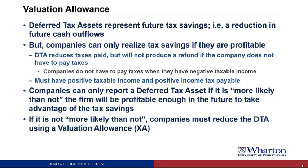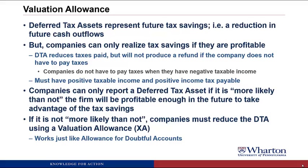If it is not more likely than not that a company will get to use these tax savings, they have to reduce the deferred tax asset using something called the valuation allowance. It's a contra asset and works just like allowance for doubtful accounts. A deferred tax asset is how many tax savings we hope to collect; we subtract the valuation allowance — the ones we don't think we'll get because we won't be profitable — leaving a net deferred tax asset representing tax savings we actually expect to collect in the future.